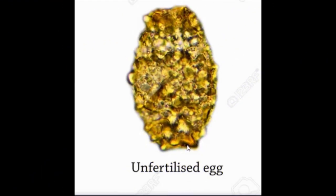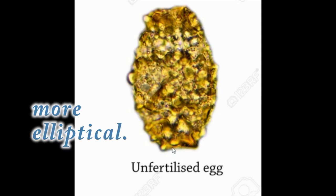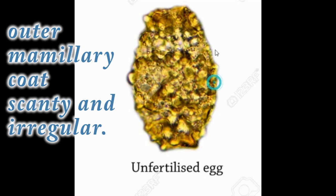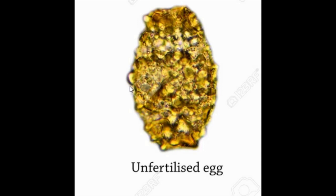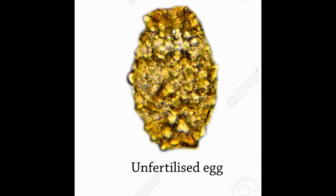This is the unfertilized Ascaris egg. The unfertilized egg is longer — up to 90 micrometers — and more elliptical in shape. The shell is thinner, with an outer mammillary coat that is scanty and irregular. The interior is atrophic and contains numerous disorganized, highly refractile granules, which you can see clearly in the unfertilized Ascaris egg.